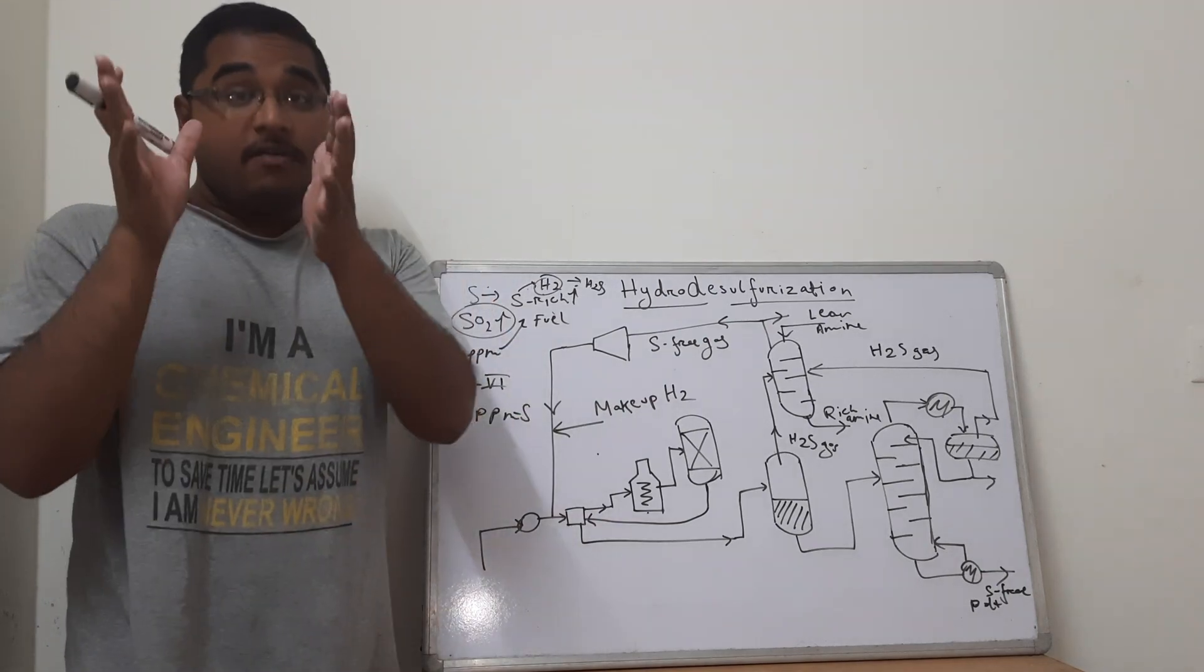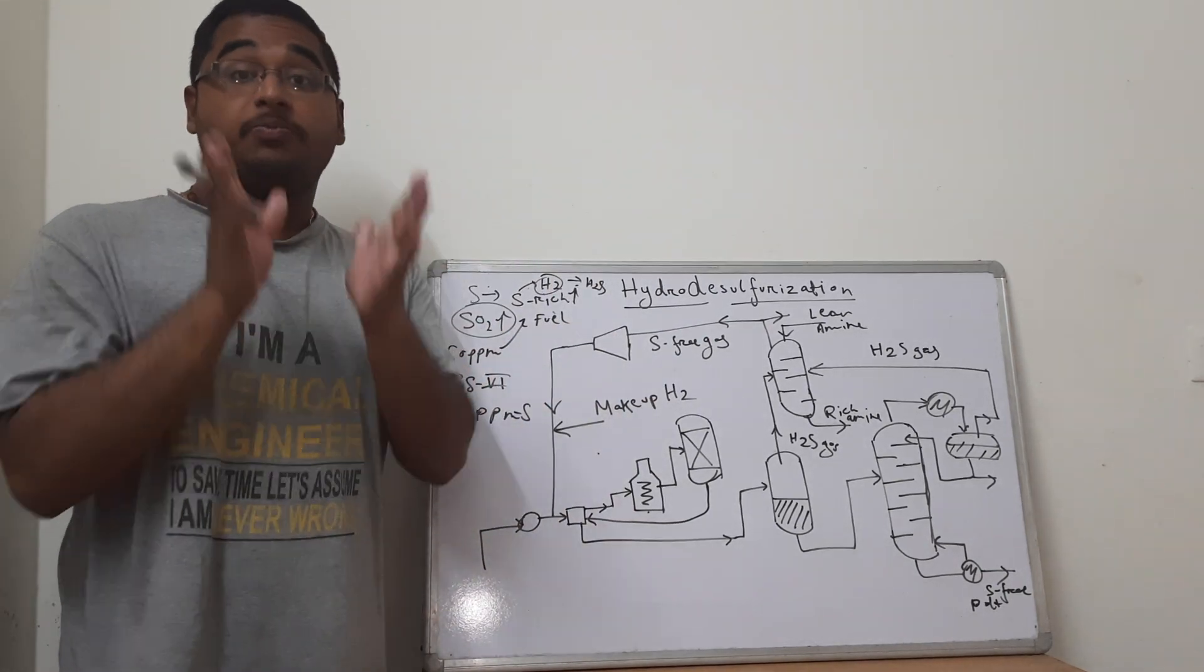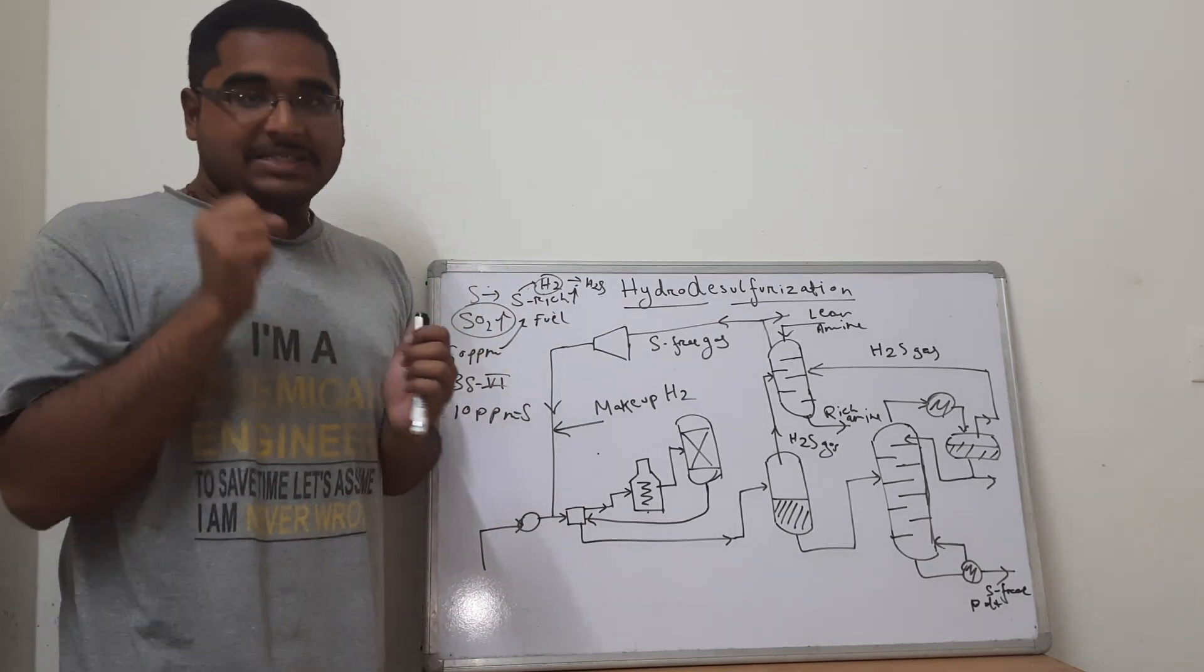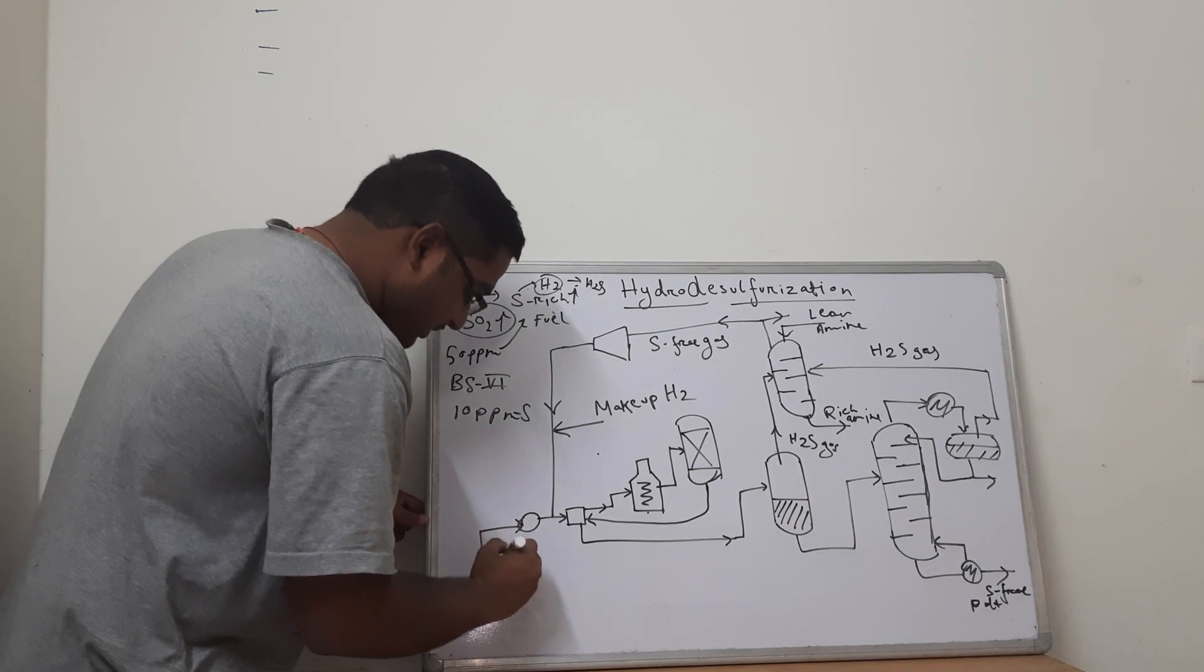So whenever we need to free out the sulfur from a particular compound, we will react it with pure hydrogen. Hydrogen primarily takes out the sulfur from the compound and that is exactly what we are doing.